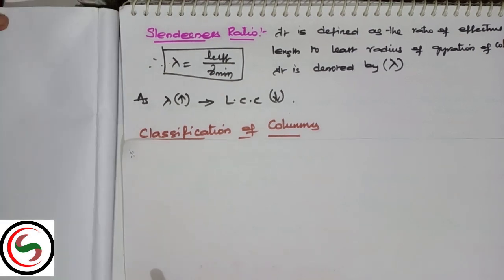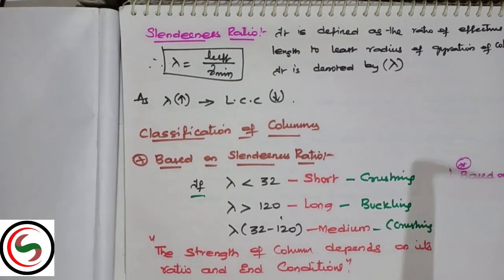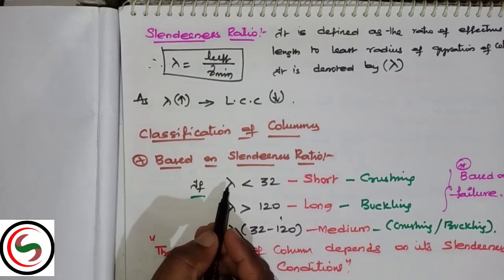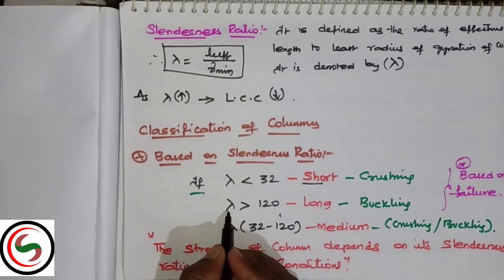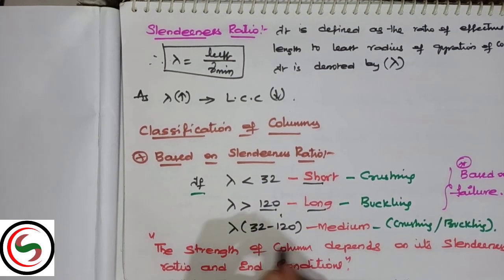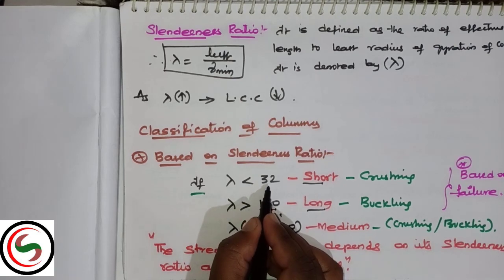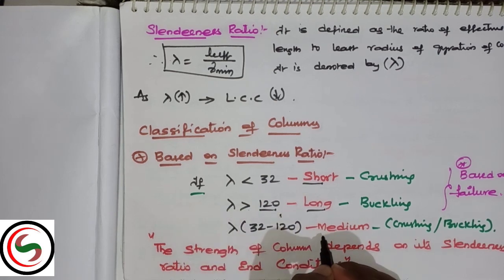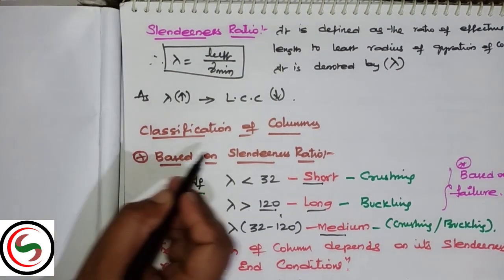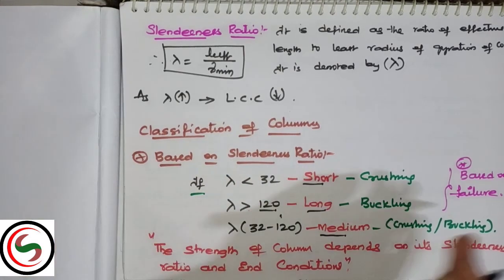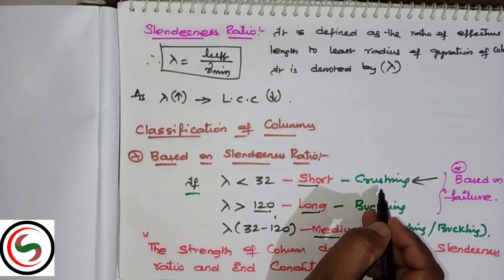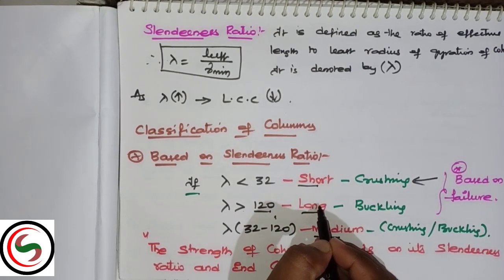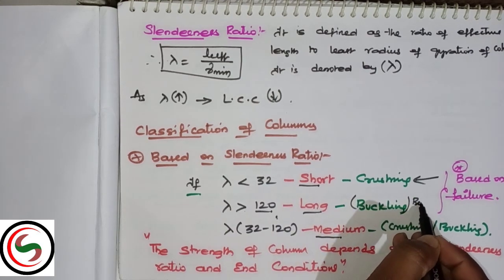Classifications of columns: first, based upon slenderness ratio. If lambda value is less than 32, it's a short column. If lambda value is greater than 120, it's a long column. Between 32 and 120 are medium columns.